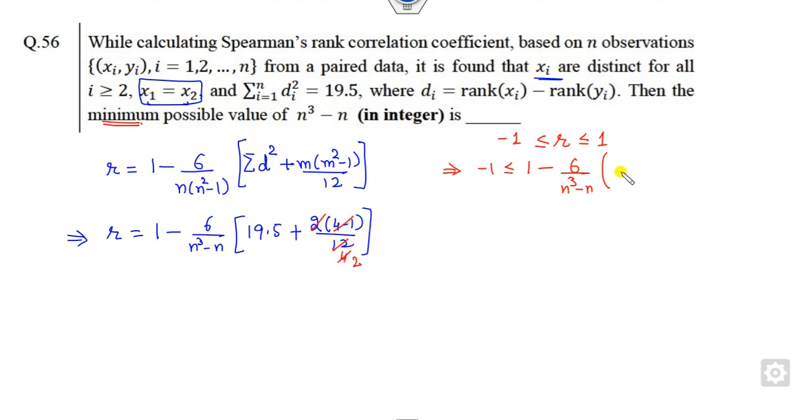So 0.5 times 20 is less than 1. This is minus 2. It is minus 6 over n³ - n times 20 is less than 0. So I can take this as less than 120 upon n³ - n is less than 2. I can divide it by 2.